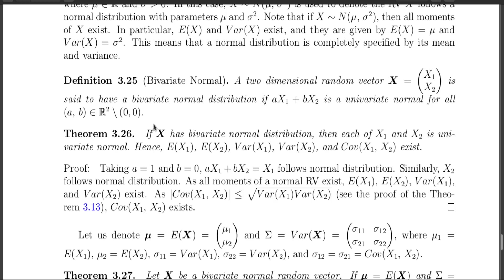The next theorem, which follows straightforwardly from the definition, says that if X has a bivariate normal distribution, then each component X1 and X2 is univariate normal. Why? Because in the linear combination, if I take a equals 1 and b equals 0, I get X1. The definition says that for a equals 1 and b equals 0, that linear combination has to follow a univariate normal, so X1 follows a univariate normal. Similarly, X2 follows a univariate normal, which I can show by taking a equals 0 and b equals 1.